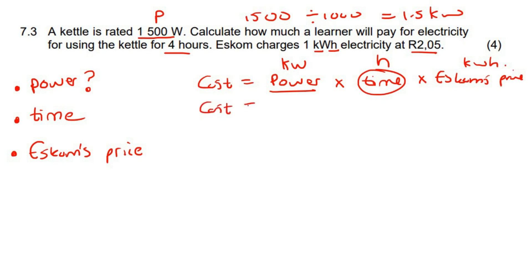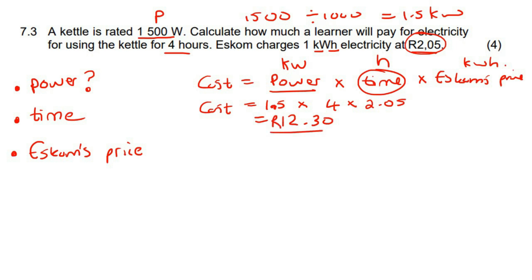So the cost is equal to 1.5 kilowatts multiplied by the time of four hours, multiplied by Eskom's price of R2.05. Working this out gives you R12.30.